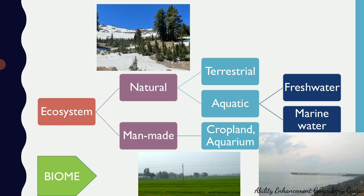Another terminology you may come across is biome. A biome is a large area characterized by plants and animals that are adapted to that particular area and its weather. For example, a forest biome has animals and plants adapted to that region. The difference between a biome and an ecosystem is that within a single biome there can be multiple ecosystems. Biomes are much larger areas and can comprise several ecosystems within them.